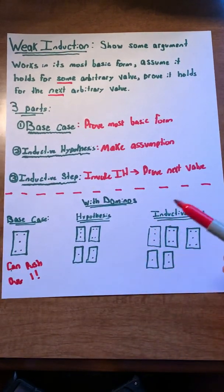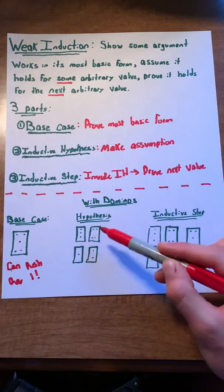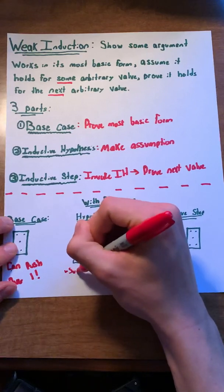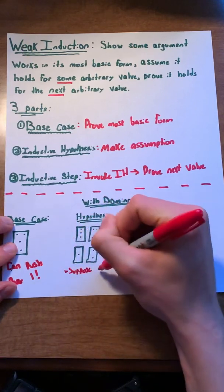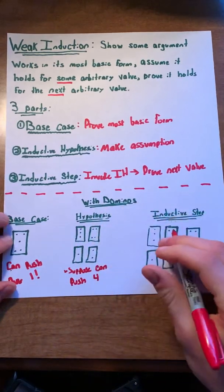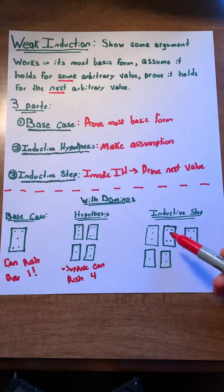Now, we might make some sort of hypothesis or an assumption. We would say, well, suppose we can push over four dominoes.